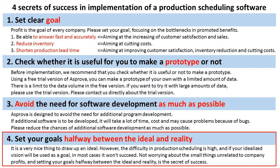Secret 4: Set your goals halfway between the ideal and reality. It is a very nice thing to draw up an ideal. However, the difficulty in production scheduling is high, and if your idealized vision will be used as a goal, in most cases it won't succeed. Not worrying about the small things unrelated to company profits and setting your goals halfway between the ideal and reality is the secret of success.